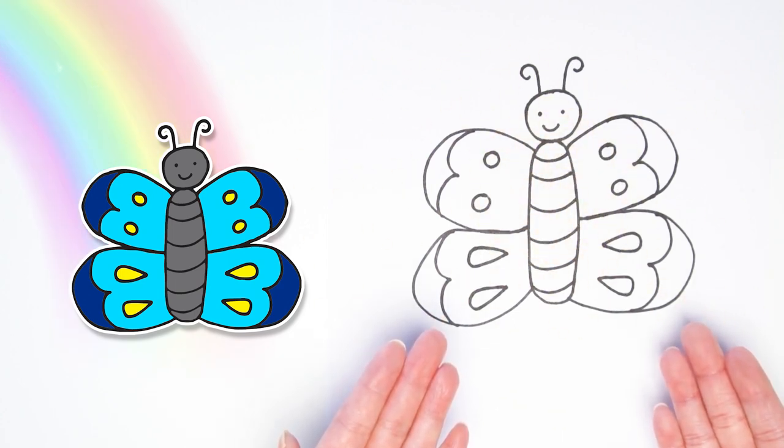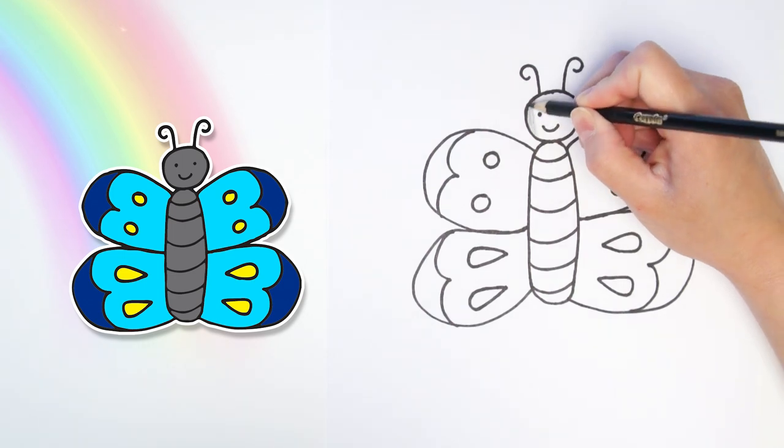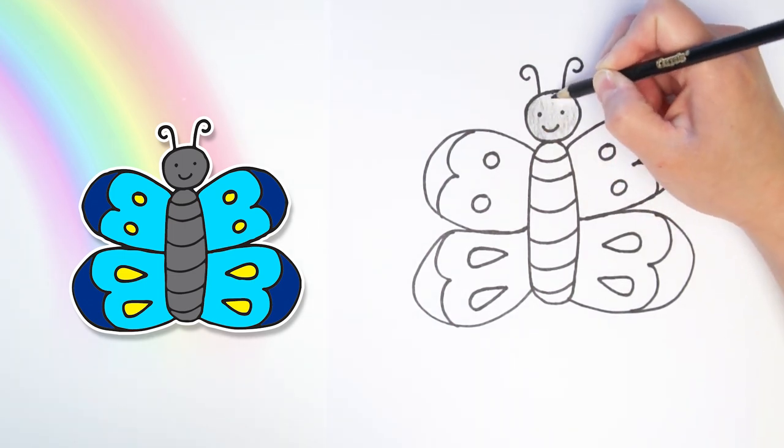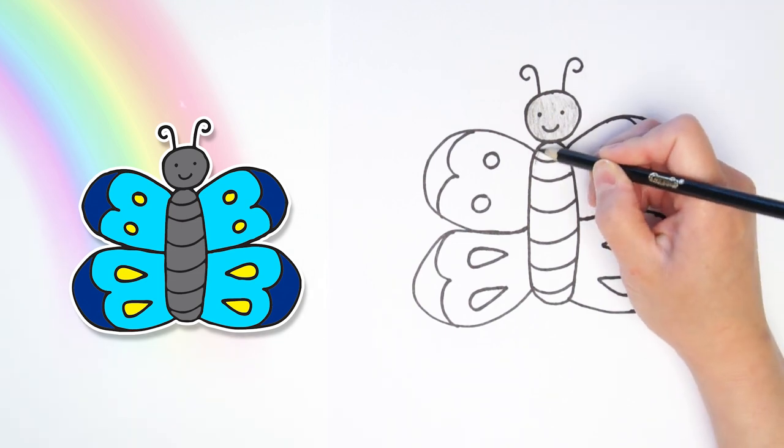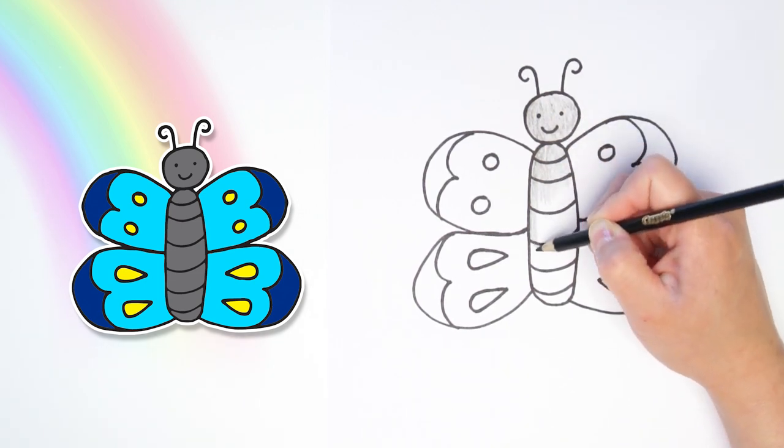Next, we are going to color. Let's fast forward through this part. I'm going to color the head and the body just a light black color. Not too dark because I want to still be able to see the face and the lines in the body.